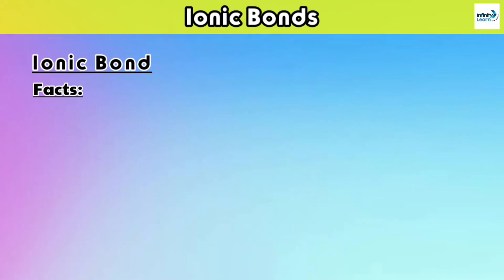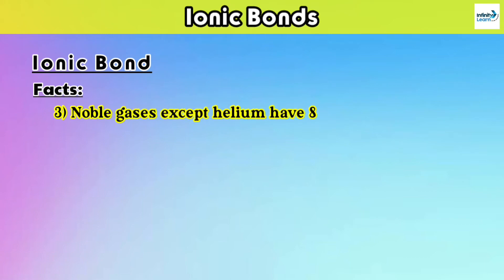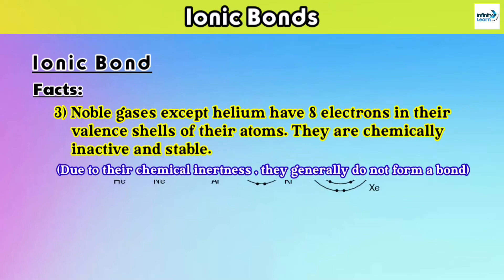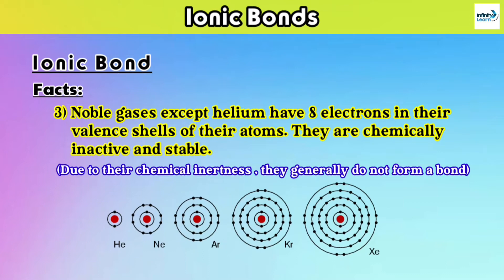Fact number three: noble gases, except helium, have eight electrons in the valence shell of their atoms — they are chemically inactive and stable. Helium has only two electrons in its valence shell because its maximum capacity for holding electrons is two. So it can neither lose nor gain electrons, making it chemically inactive and stable.